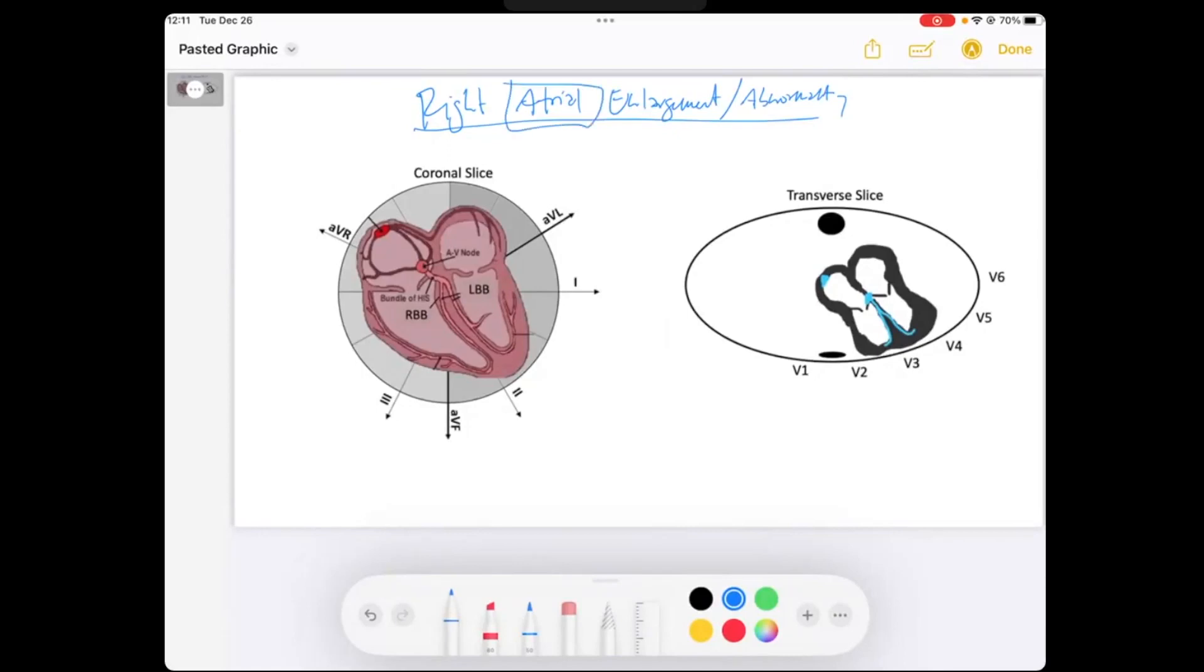We're talking about the right atria. So we're going to be looking at our P waves as the P waves are showing atrial depolarization.